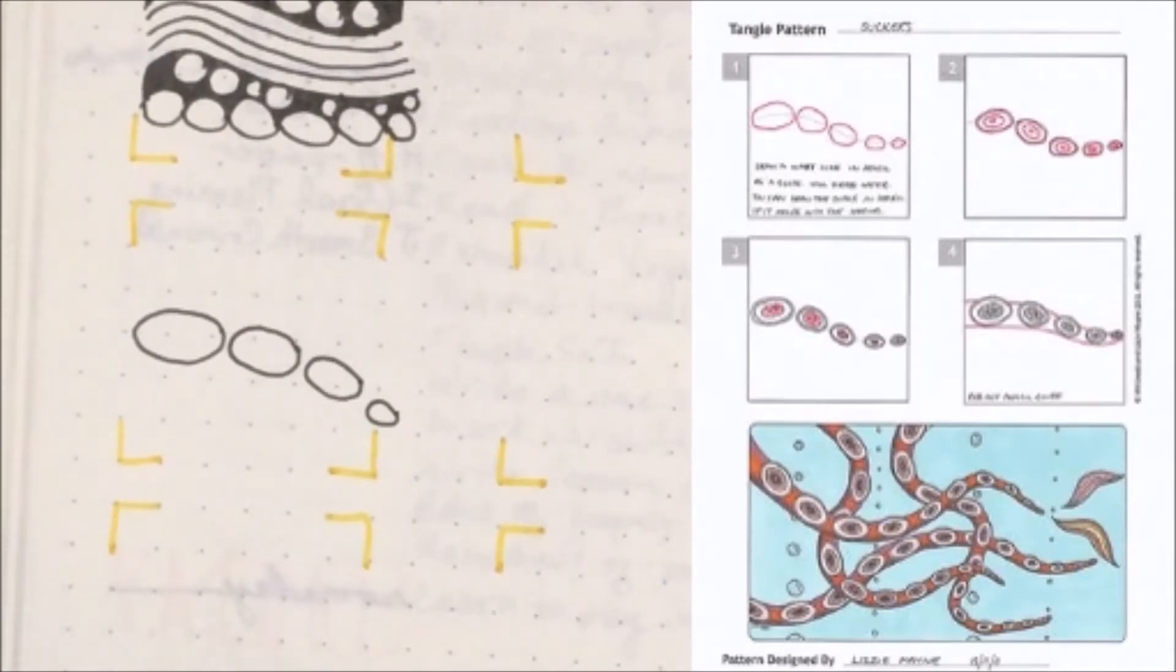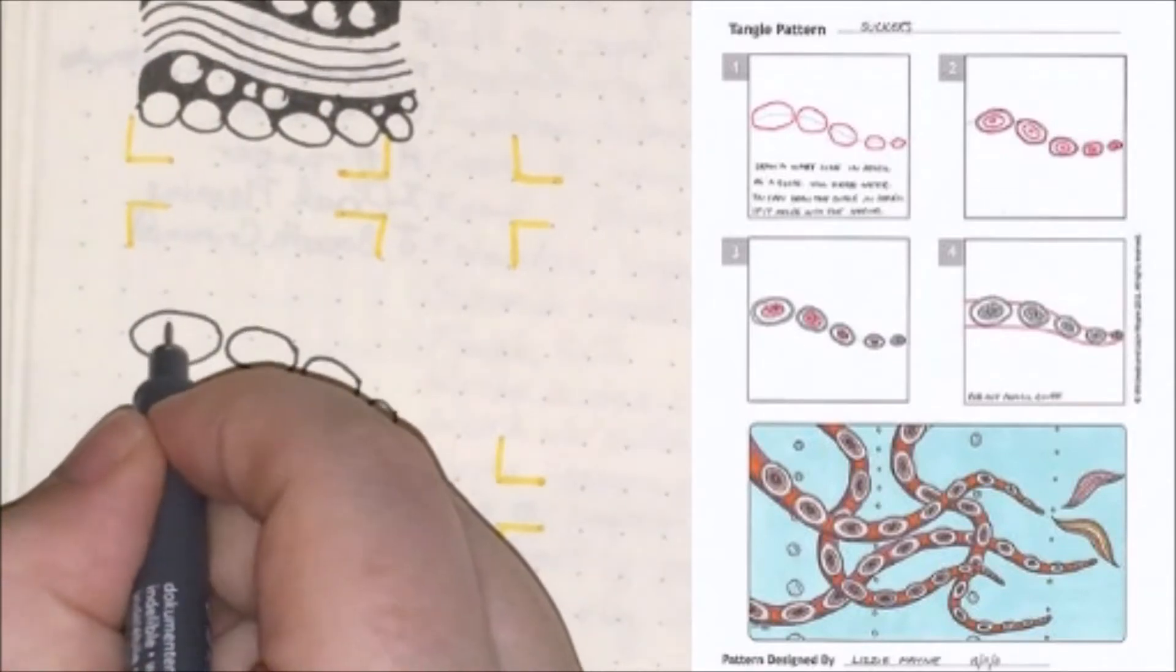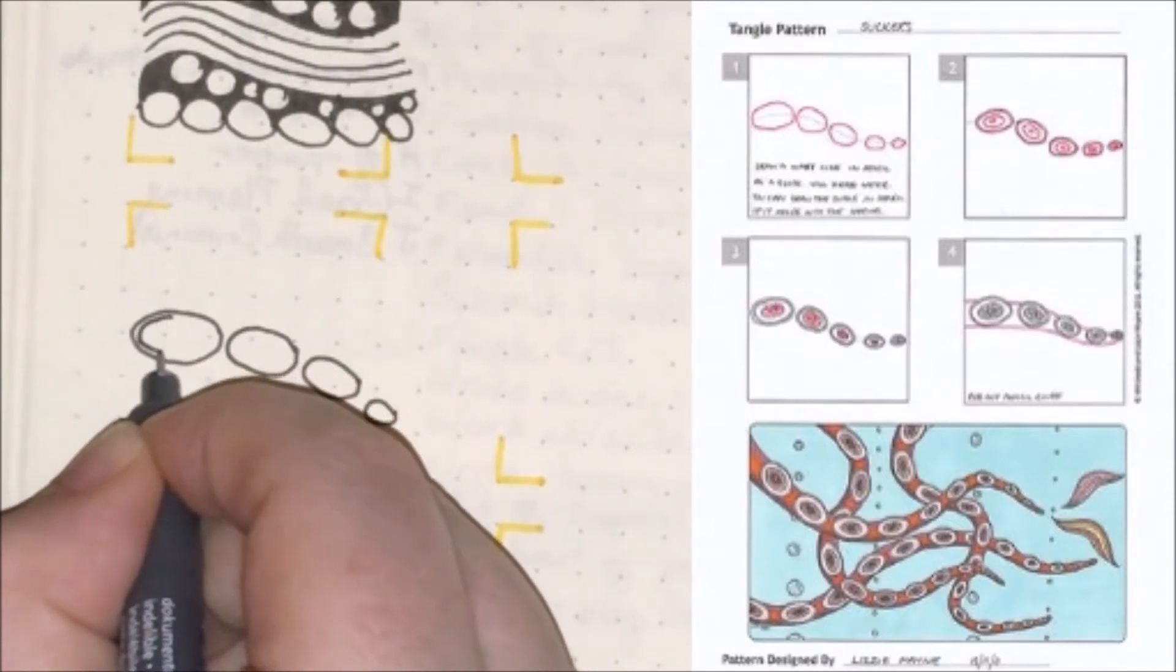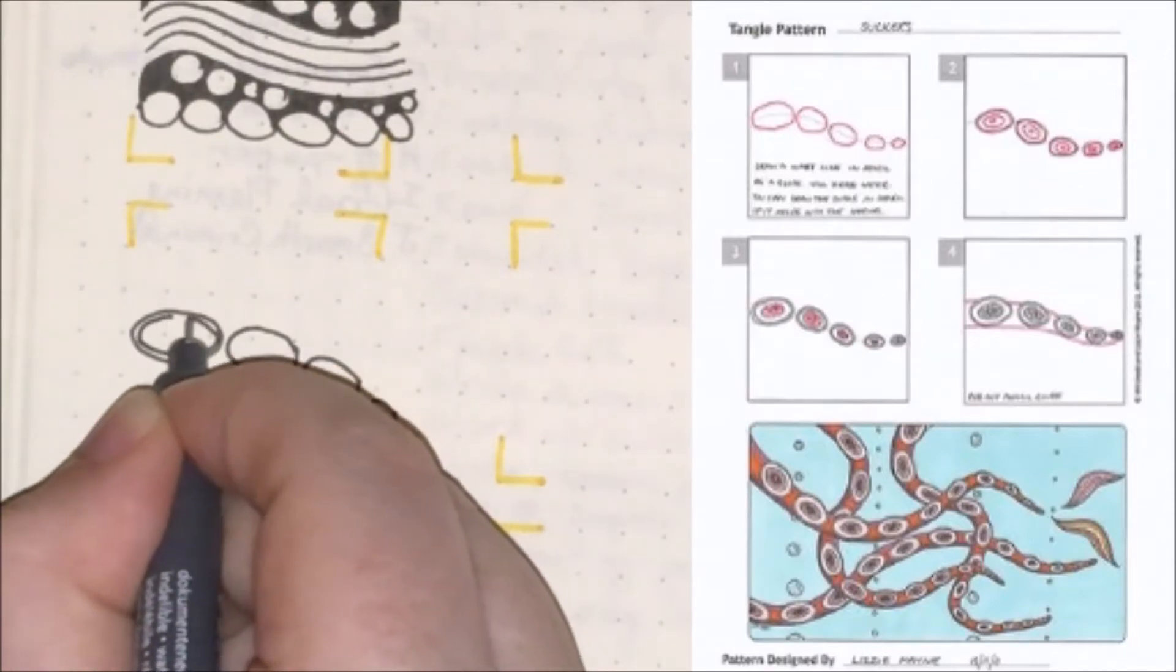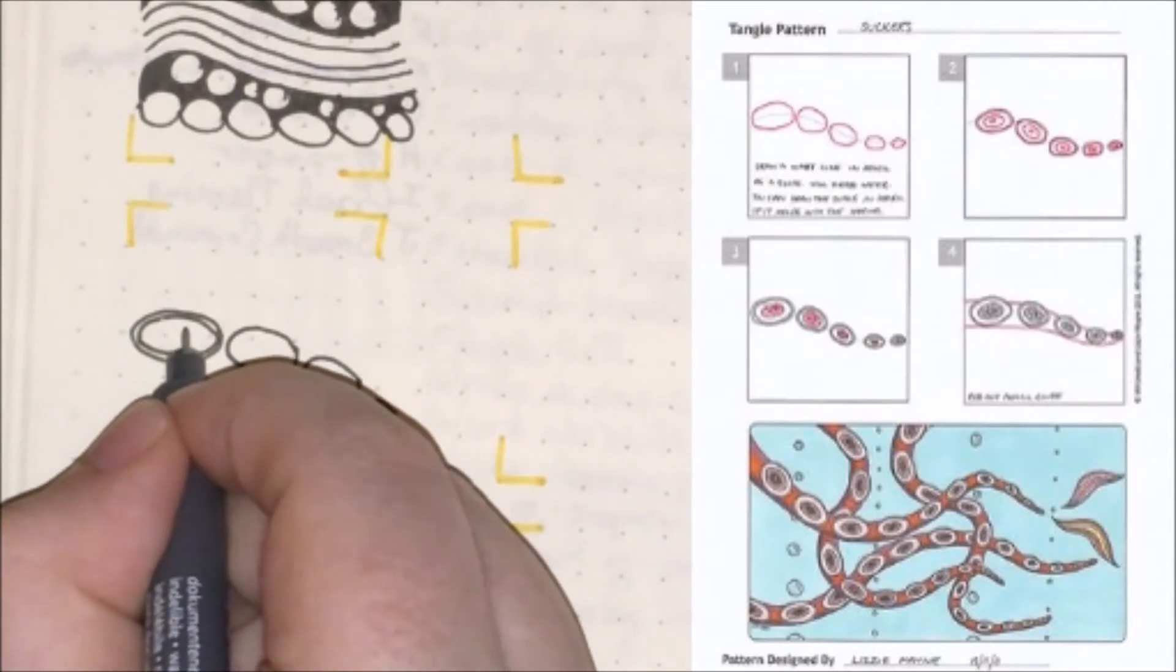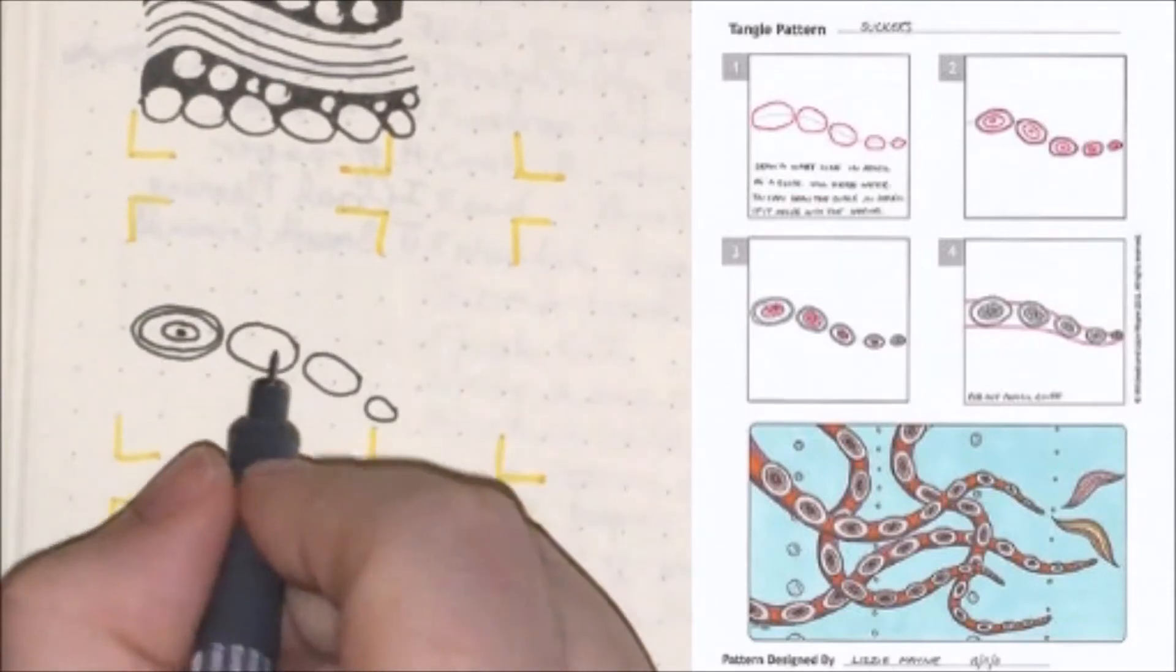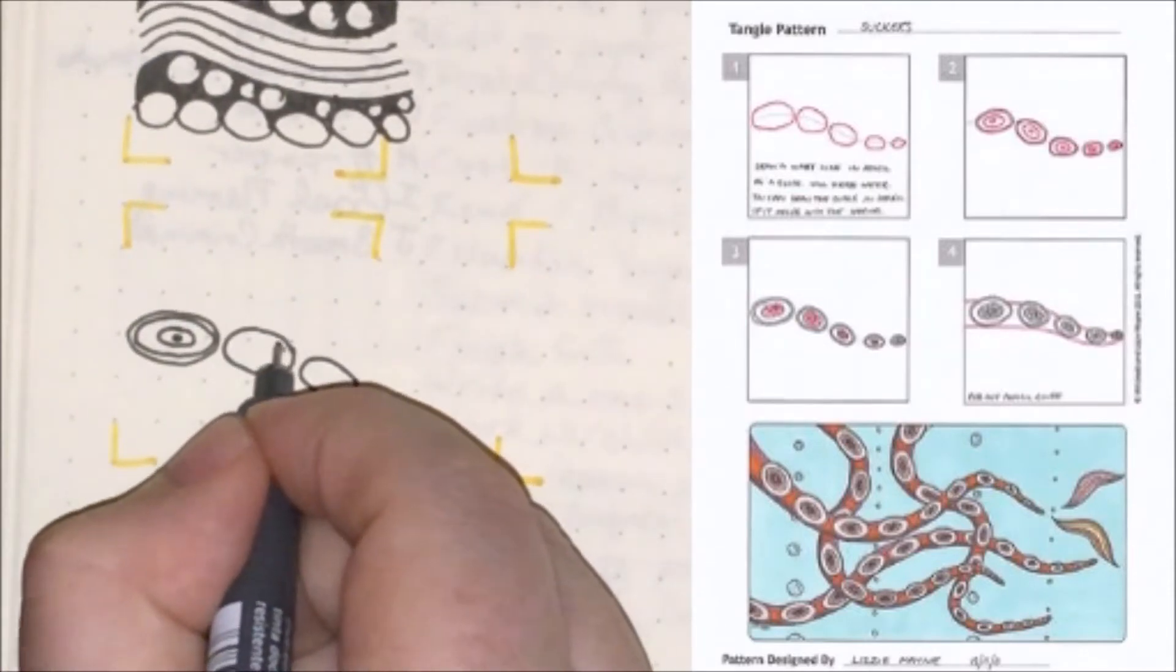Okay, and then once those ovals are in place, inside the ovals you want to draw another oval that's just inside, and then another one that comes a lot further in with a small tiny one in the center. You want to repeat that.